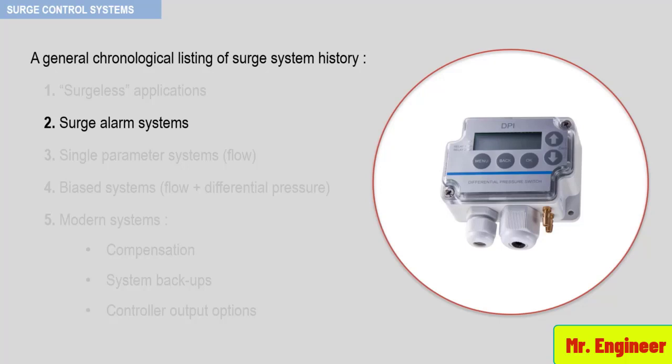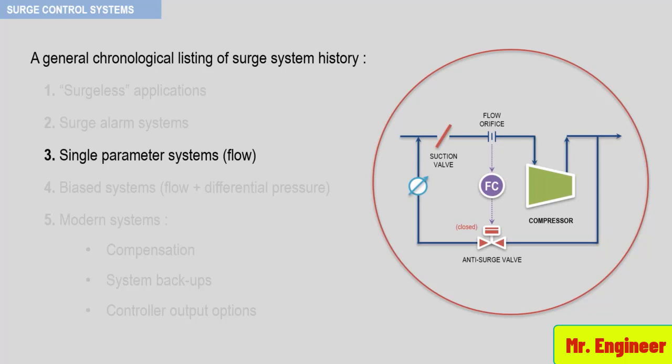The following figure shows a single parameter surge protection system. Single parameter surge systems have been employed extensively and very simply consists of a flow measuring device and an anti-surge valve as depicted here. These systems can work if properly sized and installed. However, it must be understood that a one parameter system will not be economical in a large area of operation. The result will be unnecessary recirculation of the gas and a loss of product revenue, as depicted here.